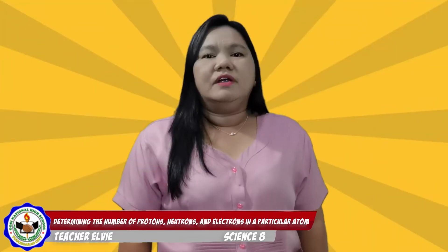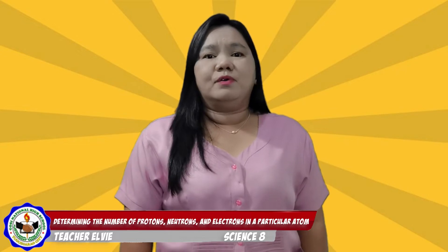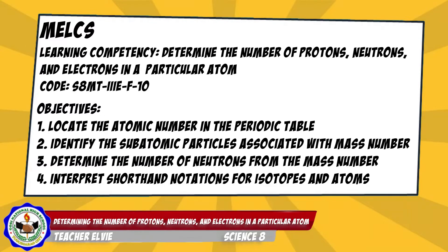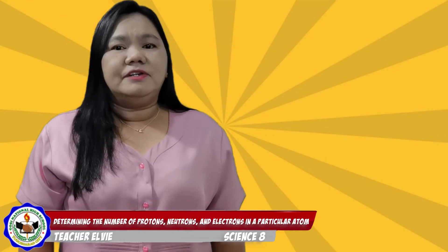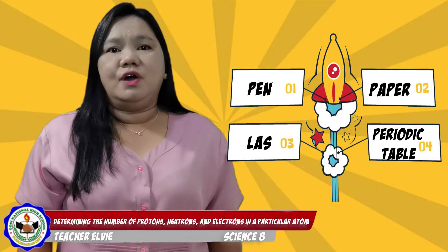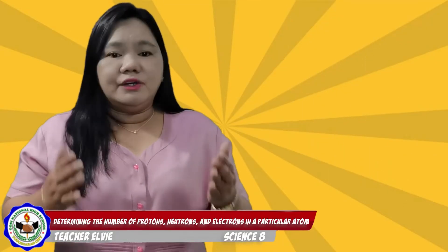Today, we are going to discuss how to determine the number of protons, electrons, and neutrons in a particular atom. In this lesson, you are expected to: 1. Locate the atomic number in the periodic table. 2. Identify the subatomic particles associated with mass number. 3. Determine the number of neutrons from the mass number. And 4. Interpret notations for isotopes and atoms. Before that, prepare yourselves as well as your pen, paper, learning activity sheets, and your periodic table of elements. Are you ready?